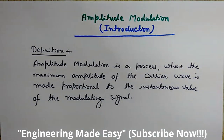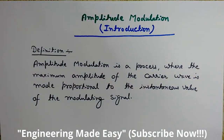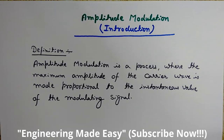In amplitude modulation the amplitude of the high frequency carrier wave is varied. While in frequency modulation and phase modulation the frequency and phase respectively of the carrier wave are varied as per the variations in the modulating or message signal. This modulating signal is also known as the message signal or the baseband signal.